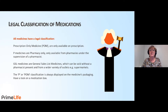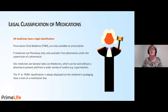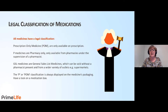GSL medicines are General Sales List medicines, which can be sold without a pharmacist present and from a wider variety of outlets, for example supermarkets, and these will have GSL on the packaging. The P or POM classification is always displayed on the medication's packaging. Have a look on your medication boxes and you will see this.